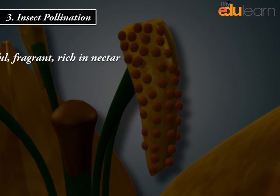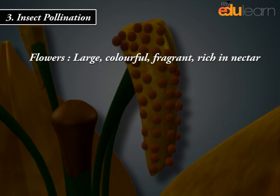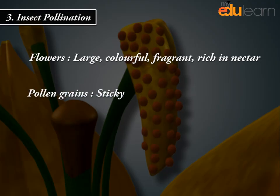Insect pollination adaptations: Flowers are large, colorful, and fragrant, and rich in nectar. Pollen grains are sticky, and the stigma is also sticky.